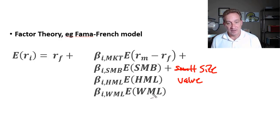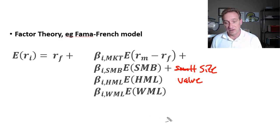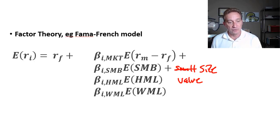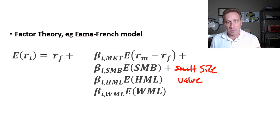There's another factor, WML, which is the momentum factor — compensation for momentum. Quoting from Andrew Ang: 'Momentum investing involves going long in stocks that have moved up — winners — in a particular period and shorting stocks that have gone down — losers — over the same period. This is based on the premise that winners will continue to win while losers will continue to lose.' The momentum factor risk is described by WML, which stands for winners minus past losers. Momentum is noticed across every asset class.